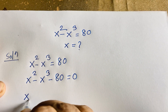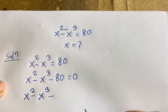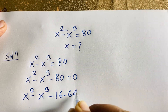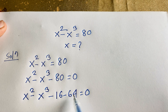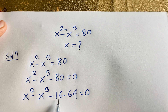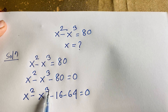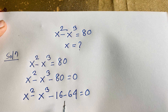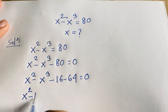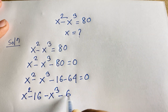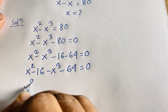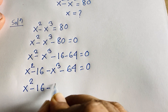Now I can rewrite 80 as 16 minus 64 equals 0. Notice that 16 and 64 relate to our variable: since we have x squared, 16 is 4 squared, and since we have x cubed, 64 is 4 cubed. So the equation becomes x squared minus 16 minus x cubed minus 64 equals 0.